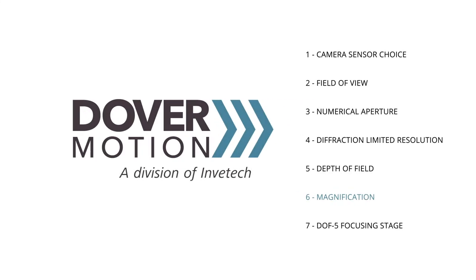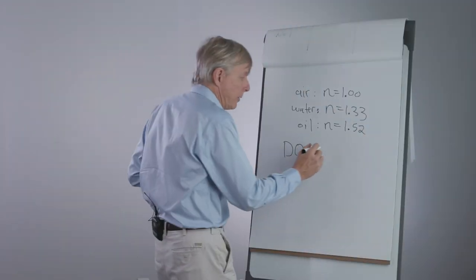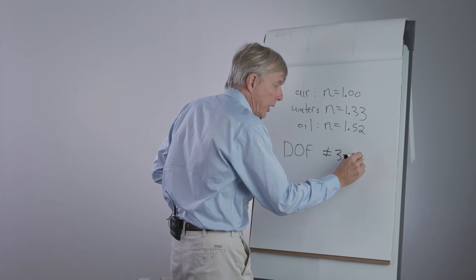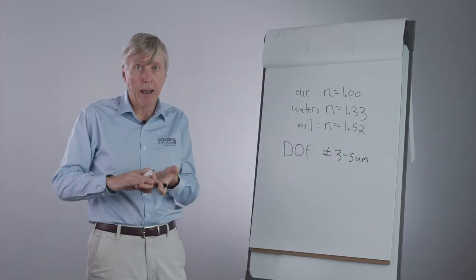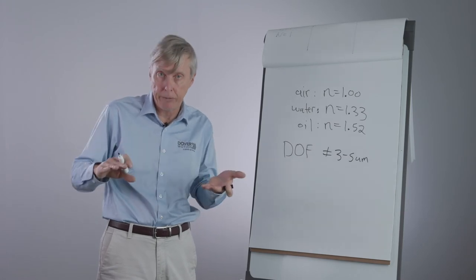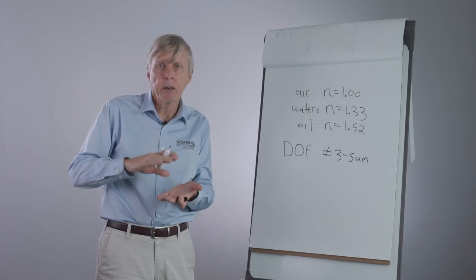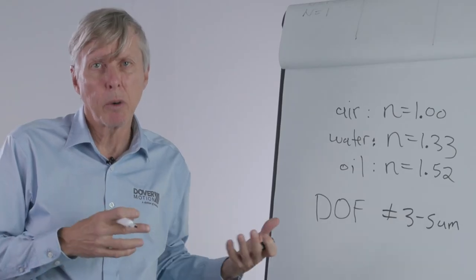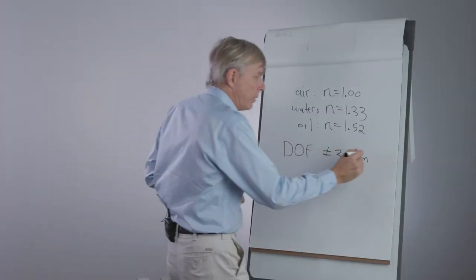For a low magnification objective, such as a 4x or even a 10x, you could often have a depth of field of plus or minus 3 to 5 microns. In that case, if your sample is very flat, you may not need to focus at all, or rather focus once and just leave it. Generally speaking, samples vary in thickness, they vary in flatness, so we usually want to focus. So this would be a 4 to 10x.